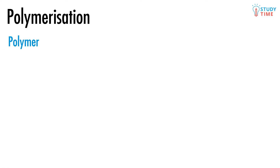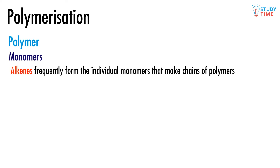A polymer is a very long chain that we find in tons of useful materials like wool, silk, and rubber. The special characteristic of polymers that allows them to be so long is that they're made up of lots and lots of smaller repeating units called monomers. Alkenes frequently form the individual monomers that make these great big chains of polymers that we use.